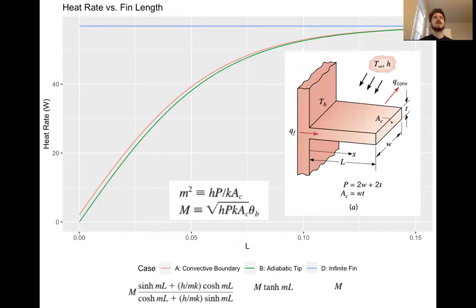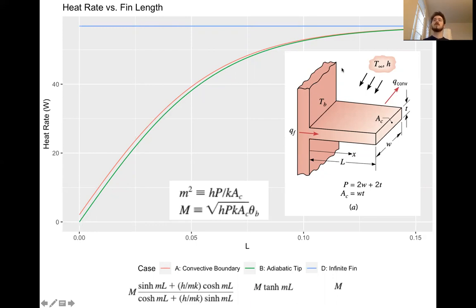The first plot shows heat rate versus FIN length for each of the three models. Red is the convective boundary model — what we'd call the most accurate. Green is the adiabatic tip model, and blue is the infinite FIN model. We plugged in different values for L from 0 to 0.05 to make smooth lines. The first thing you'll notice is that the infinite FIN model doesn't care about length — that makes sense because L doesn't appear in it, and M is not a function of L.